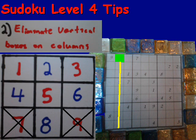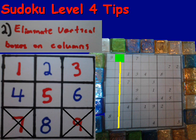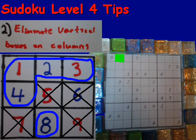Second, you want to eliminate vertical boxes on columns. So if we go back to the same corresponding thing and look at the vertical — well, there's a 9, 5, and a 6. The 9 is already limited, so we take out the 5 and then the 6, which leaves us with the possibility of 1, 2, 3, 4, and 8.